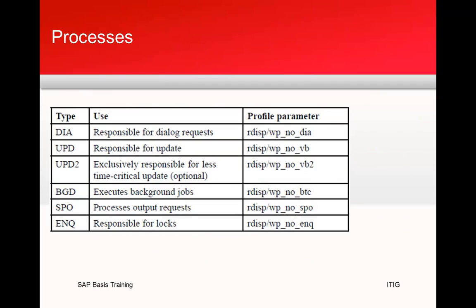In the SM50 transaction you can see all these processes in the process table. DIA represents dialog requests. The profile parameter for dialog work processes is rdisp/wp_no_dia — for example, if you have five dialog work processes, this parameter value is set to five. You update the profile accordingly.